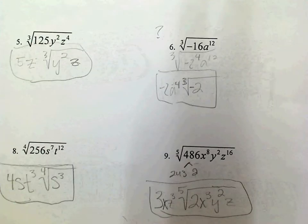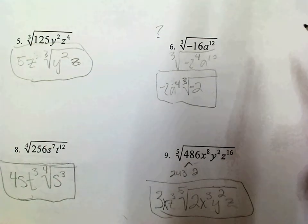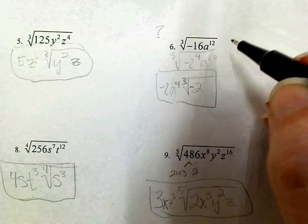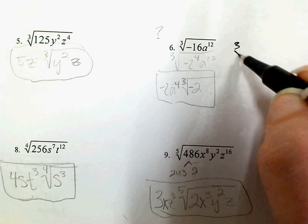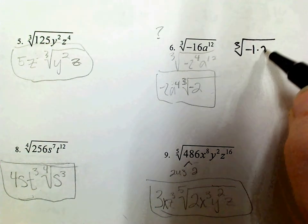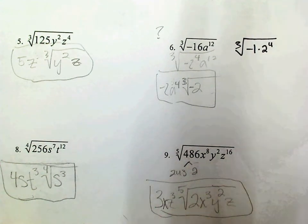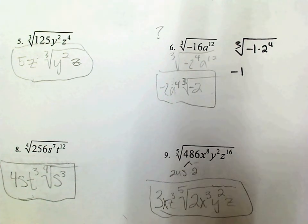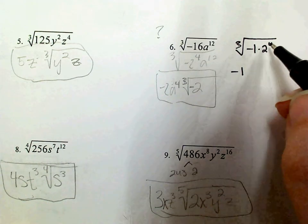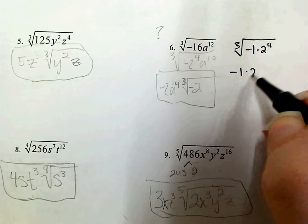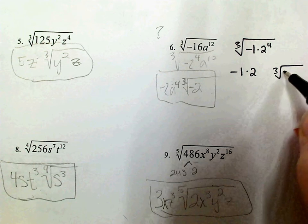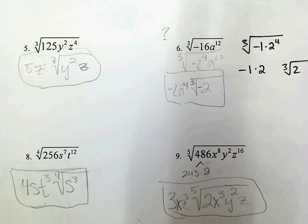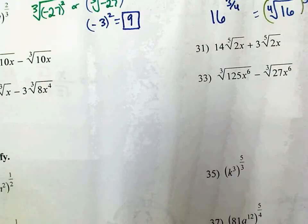Student question: when we turn it to that, do we take a negative 2 out? I would think of it as the cubed root of negative 1 times 2 to the 4th power. The cubed root of negative 1 is negative 1, because the cubed root of a negative is negative. Then 3 goes into 4 one time with 1 left over, so that'll be a negative 2 on the exterior.